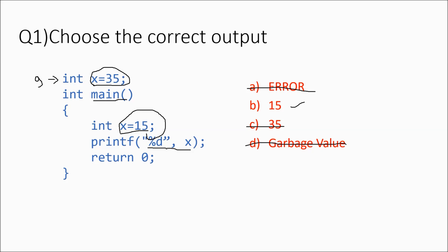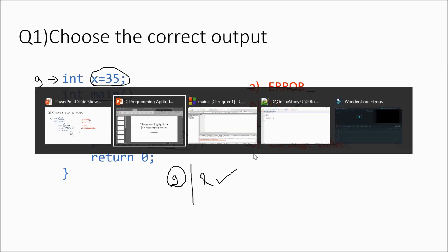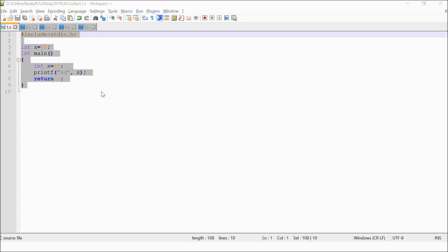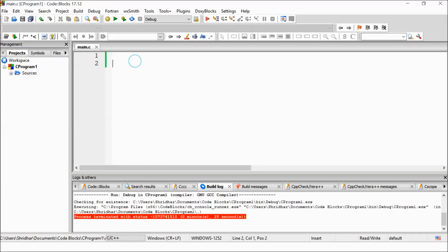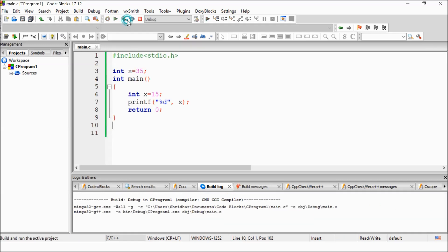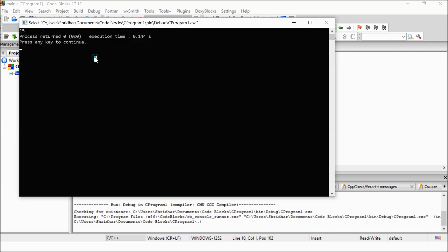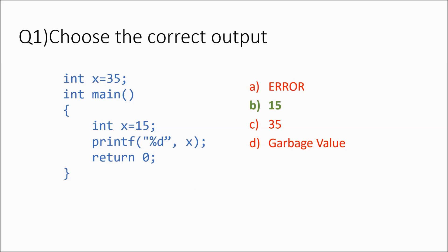Here is the explanation. Whenever you have a global variable and a local variable with the same name, preference is given to the local variable first. So x is a global variable here, but whenever you print x, if there is a local variable with the same name, that is given preference. So x is taken from the local scope and the answer is 15. Option B is the right answer, confirmed by running it in Code Blocks IDE.